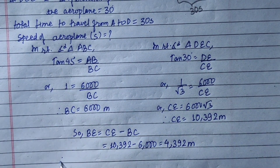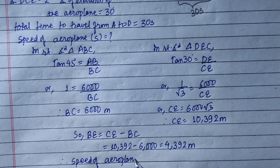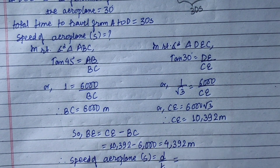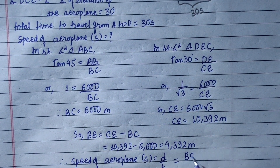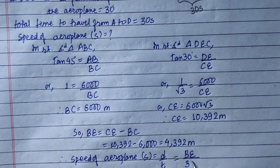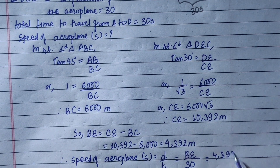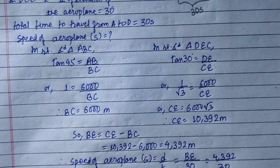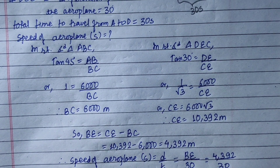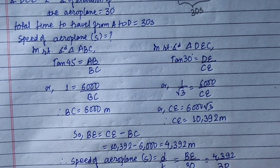Finally, we have to find the speed. Speed of aeroplane equals distance upon time. The distance is BE and the time is 30 seconds. So speed equals 4,392 divided by 30, which equals 146.4 meters per second.